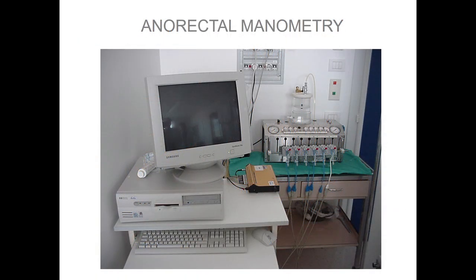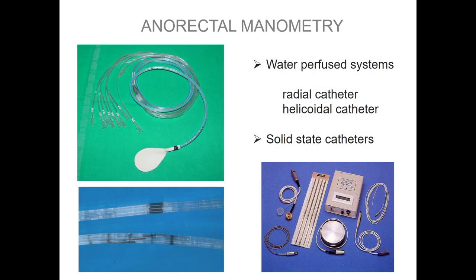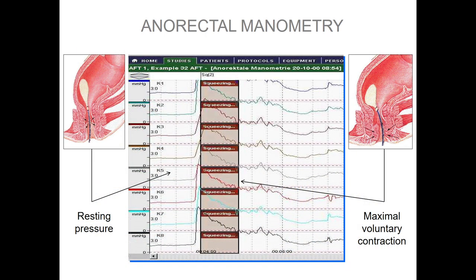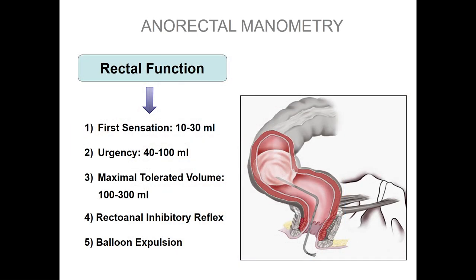Anorectal manometry — we have different kinds: water-perfused systems, solid-state catheters, or high-resolution manometry. Why do manometry in outlet obstruction? To see the functionality of the sphincter, but more importantly to assess rectal functionality: fecal sensation, urgency, maximum tolerated volume, the rectoanal inhibitory reflex for Hirschsprung disease, and the balloon expulsion test.